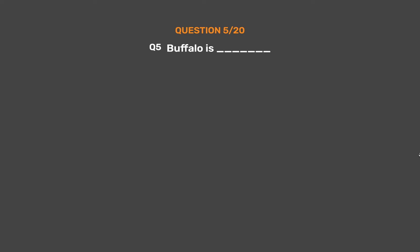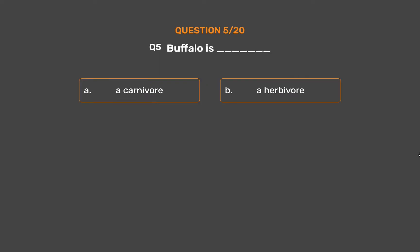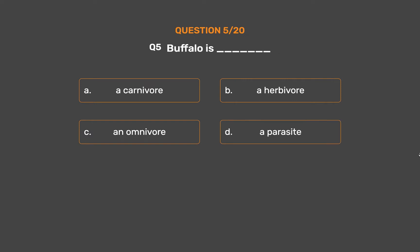Question number 5. Buffalo is: Option A, A carnivore. Option B, A herbivore. Option C, An omnivore. Option D, A parasite.